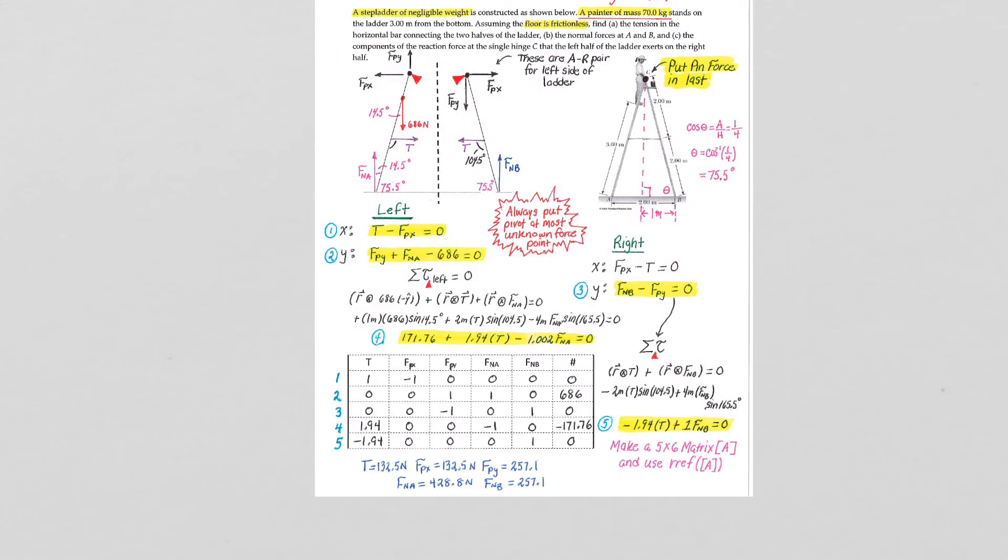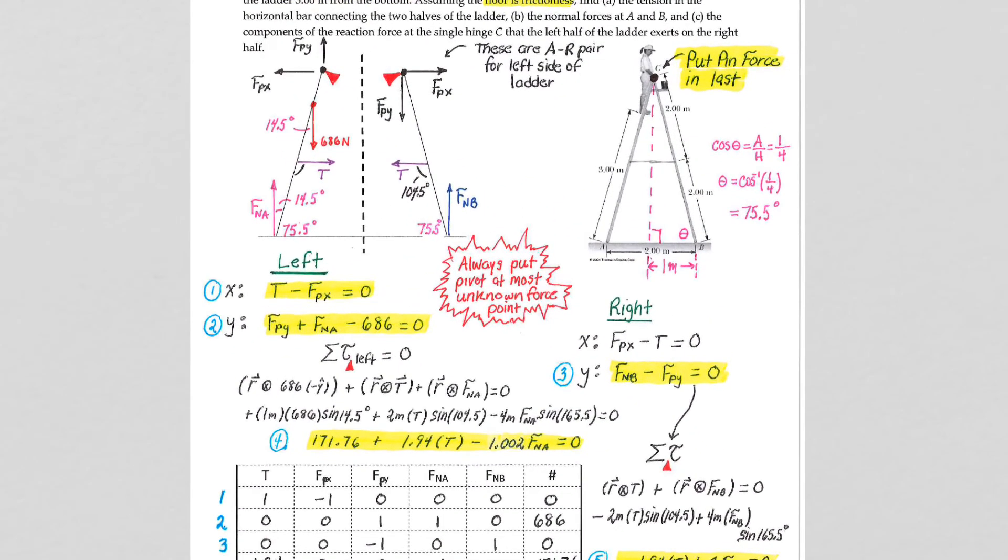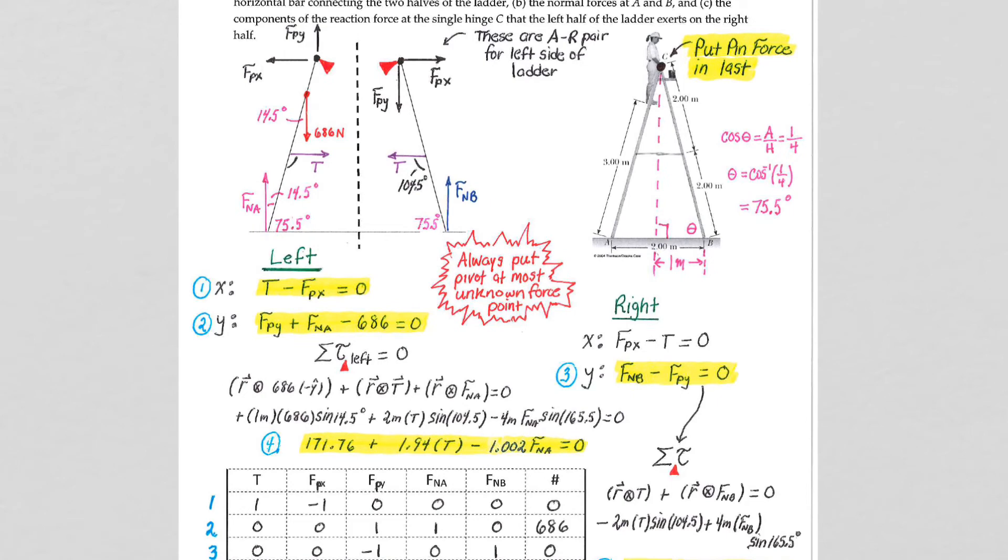We get, oh, it gets messy. But, let's sort this out. All right. Please make sure you get this statement here in the middle into your notes. This is really important. You will always put the pivot point of rotation at the point that has the most unknowns. And, in terms of the most unknowns, remember our five unknowns were tension, pin force X, pin force Y.